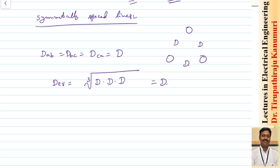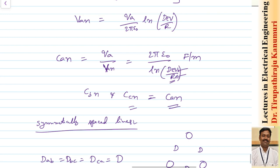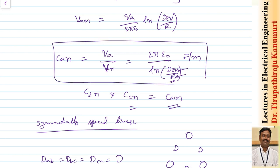In general, to calculate the capacitance of any three-phase transmission line, the formula is C = 2π ε₀ / ln(GMD / GMR). However, the GMR for capacitance calculation is R (the actual conductor radius), not R' as used in inductance calculations. Everything else remains the same.